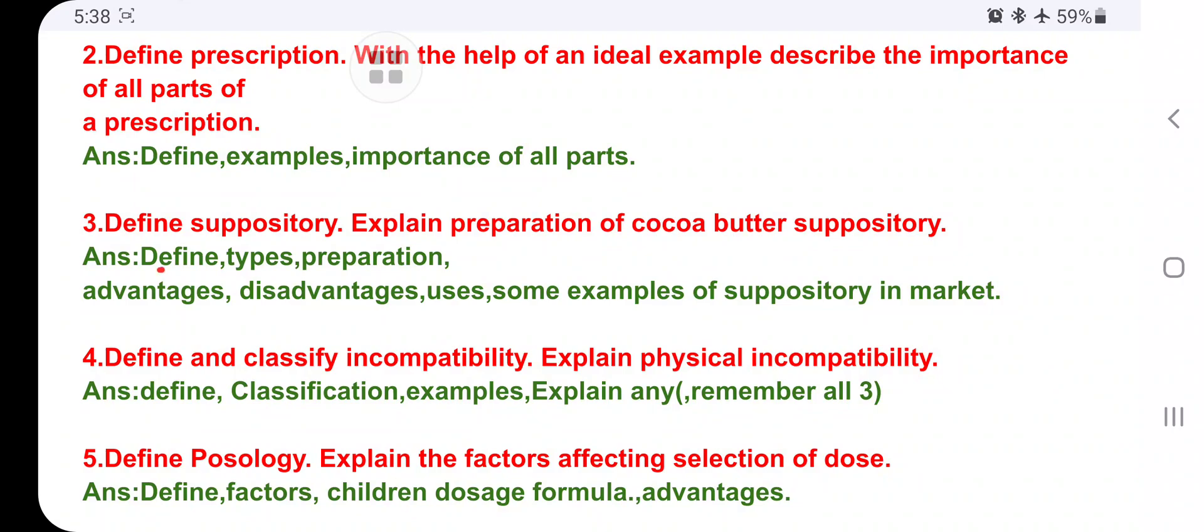Then define suppository: Explain preparation of cocoa butter suppository. Anything if they ask - suppository, emulsion, suspension, anything - try to write the definition, advantages, and disadvantages. Here also same: define suppository, write types and preparation. For any one preparation write advantages. Particularly they ask cocoa butter, so write only cocoa butter advantages, disadvantages, uses, and some examples of suppositories in the market like Dulcolax, Glycerin, Paracetamol suppository.